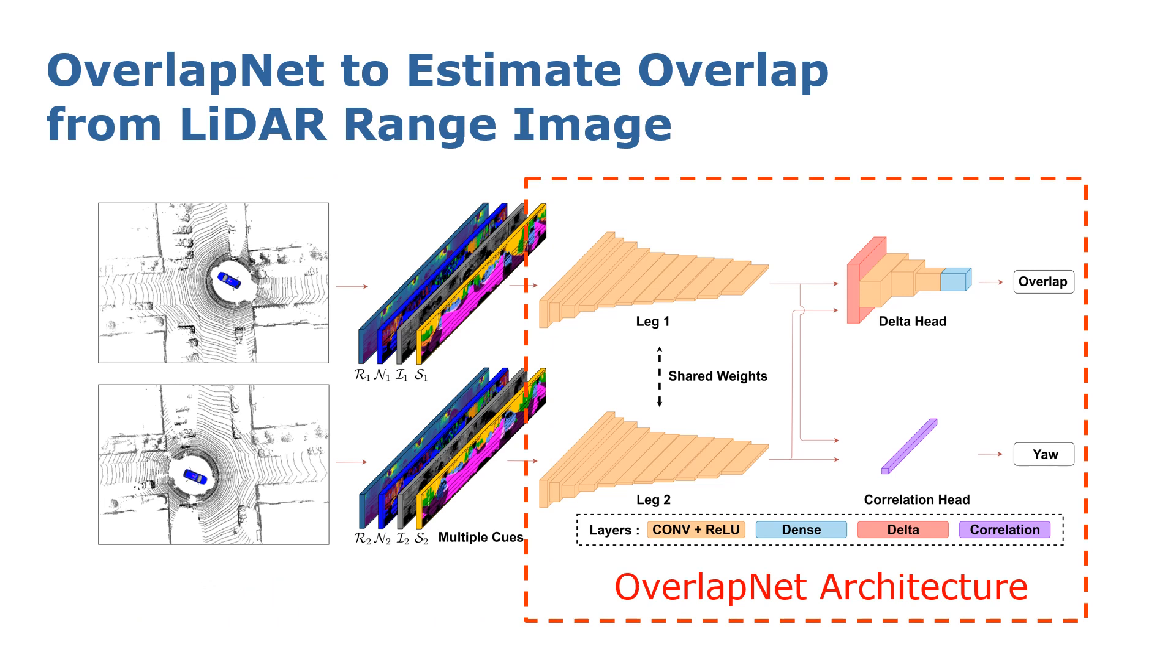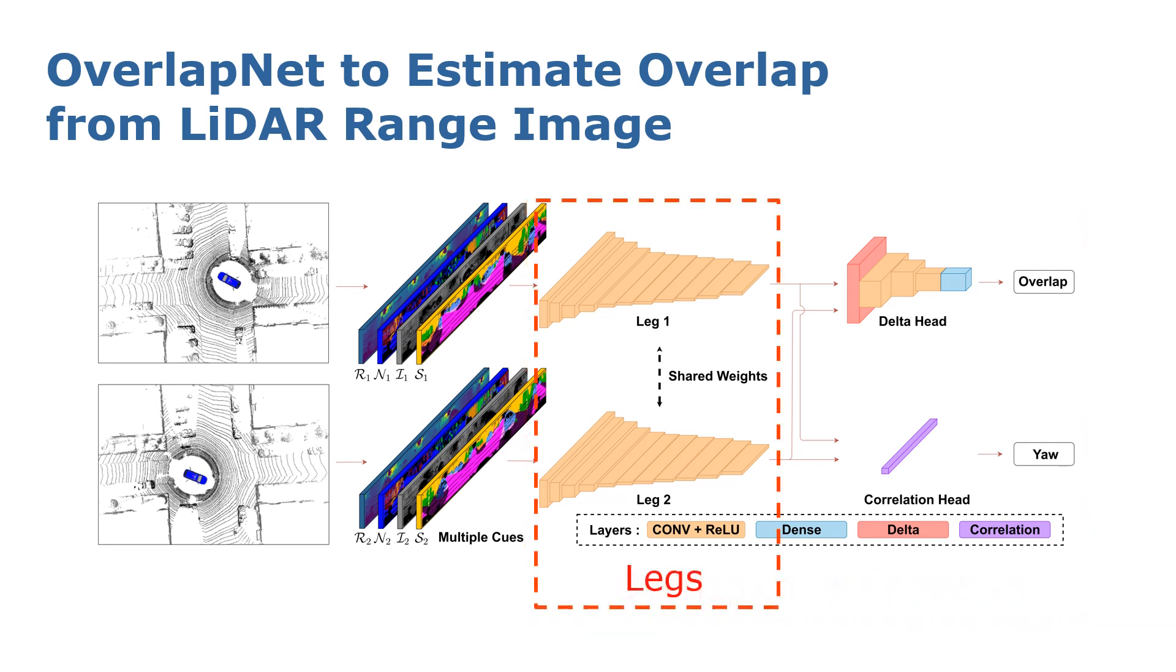On the right-hand side, you see the architecture of OverlapNet, which is a modified Siamese network. It consists of two legs and two heads. The two legs have the same architecture and they share all weights. The two heads use the same pairs of feature volumes generated from the two legs. One head is called the delta head, which is used to predict the overlap between pairs of LiDAR scans. The other head is called correlation head, which is used to predict the relative yaw angle between pairs of LiDAR scans.